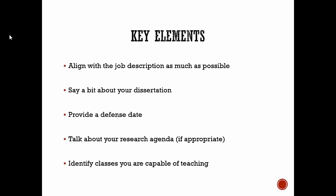And identify classes you are capable of teaching. But again, think about the job description. So if you are applying for a job to teach children's literature, then talk about classes that you are capable of teaching that align with children's literature. Take a look at what courses the university offers that you are applying to. It's not that you're going to be teaching those courses, but you might teach some of those courses. So look at the courses that seem like they align with your job and identify them. You don't have to stick to just those courses.